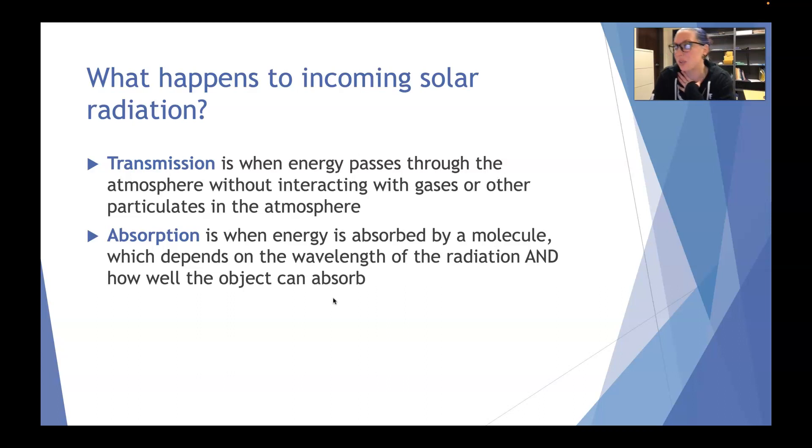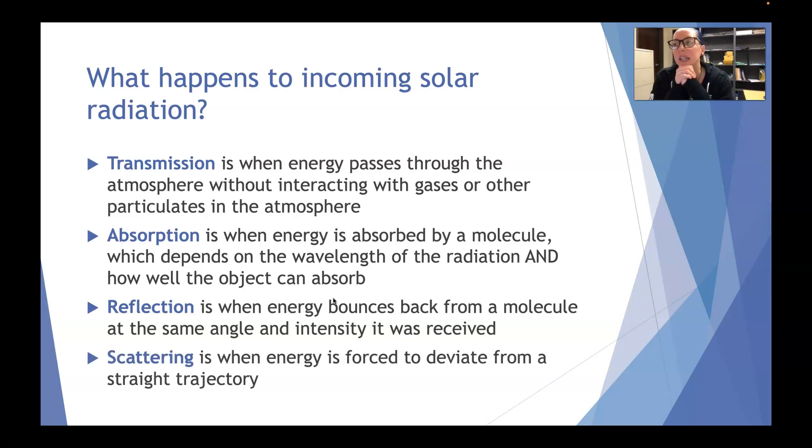Another thing that can happen to solar radiation is this idea of reflection. So it can be reflected by molecules and particulates in the atmosphere. So reflection is when the energy is bounced back from a molecule at the same angle and the same intensity. So the value of the light has not changed at all. It's just kind of reflected away similar to like, you know, when you look at a mirror or something, that's a reflection. Nothing has changed about your appearance. You're just looking straight up about what does your reflection show who you are inside, right? If you want to get Mulan about it.